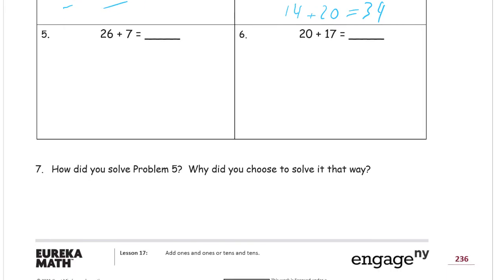26 plus 7. Here's another one that has a lot of ones. So I'm going to use Number Bond here. 20 and 6. And then if I add the 6 plus the 7, that's 13.